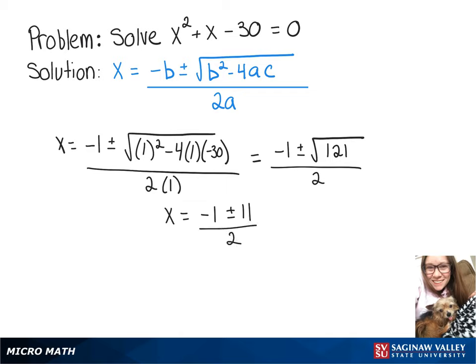So we'll have two possible answers. x is either equal to negative 1 plus 11 over 2 or x is equal to negative 1 minus 11 over 2.